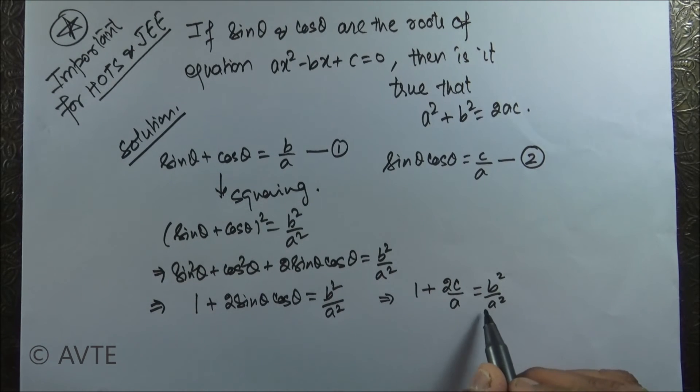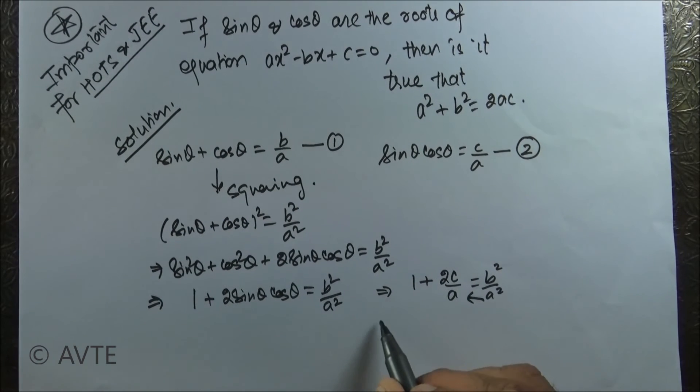If I cross multiply a squared to the other side, we get a squared plus 2 a c is equal to b squared.